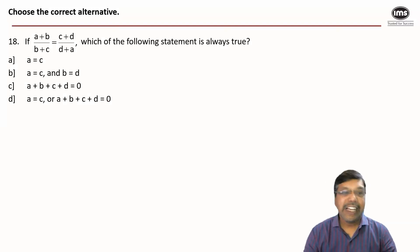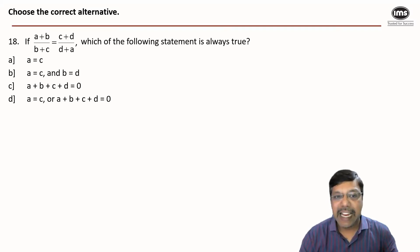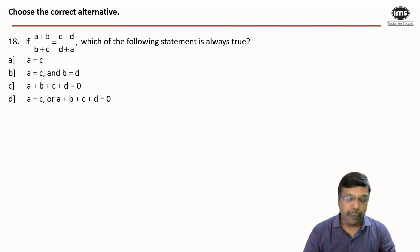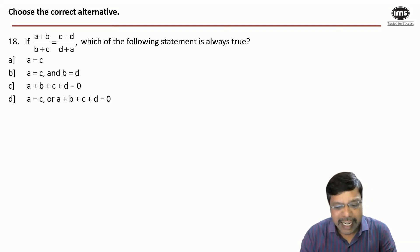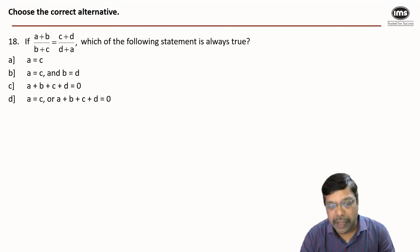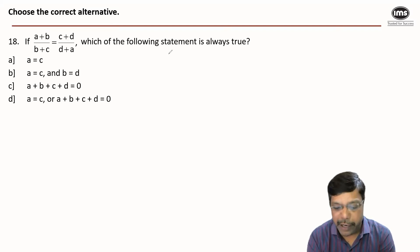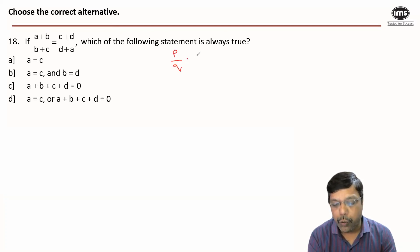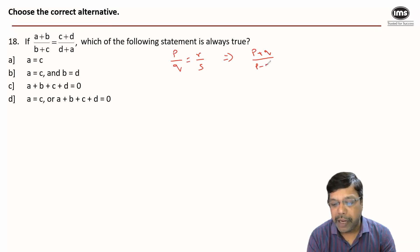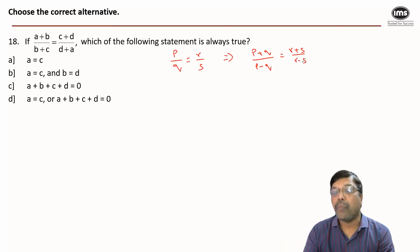Let's see how we answer question 18. It is given that (A+B)/(B+C) = (C+D)/(D−A), and we need to determine which of the following statements is always true. Usually in such cases, we either use substitution or simplify the expression. Here I will use the rule of componendo and dividendo. This rule states: if P/Q = R/S, then (P+Q)/(P−Q) = (R+S)/(R−S).